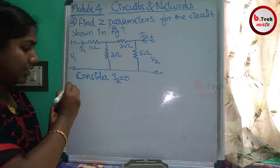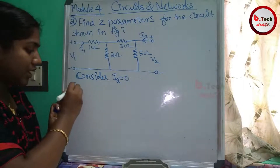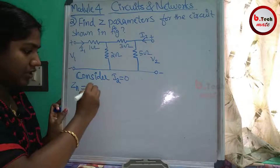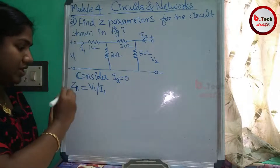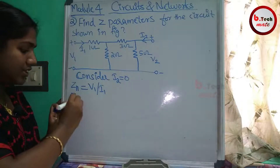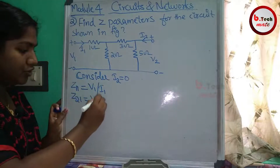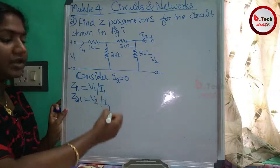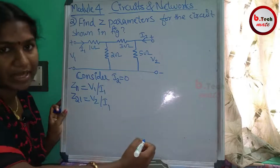We have two parameters to find. Z11 is V1 divided by I1, and Z12 is V2 divided by I1. Both parameters depend on I1 with the output open-circuited.